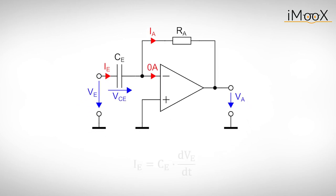But instead of the current voltage relation of the resistor RE, we use the one of the capacitor CE. And from here on it's just like for the inverting amplifier. We calculate the voltage drop over RA and the output voltage is minus this voltage drop. The output voltage is proportional to the derivative of the input voltage and we can scale it with the product RA times CE.